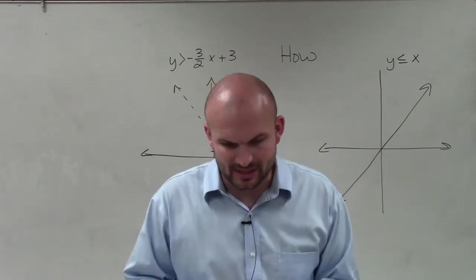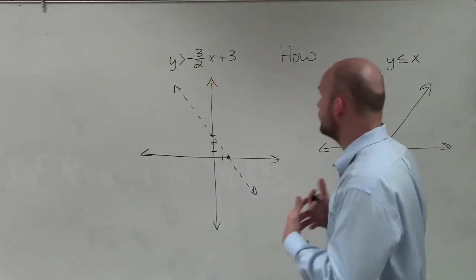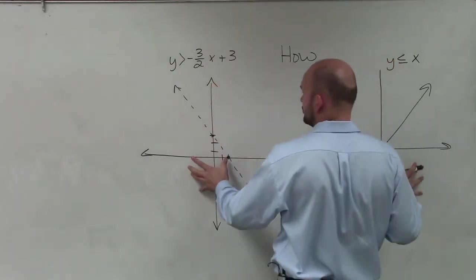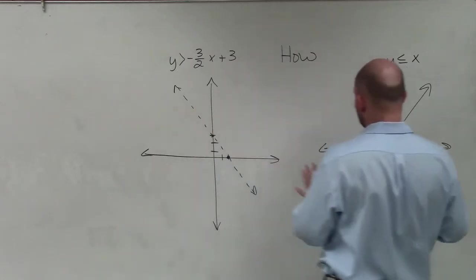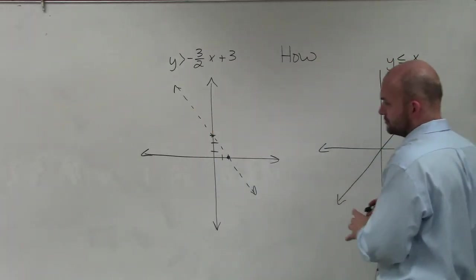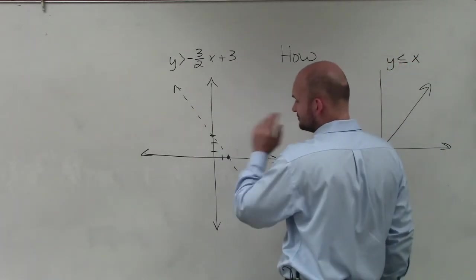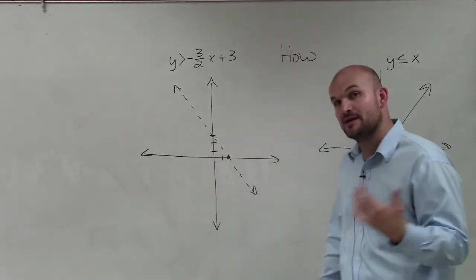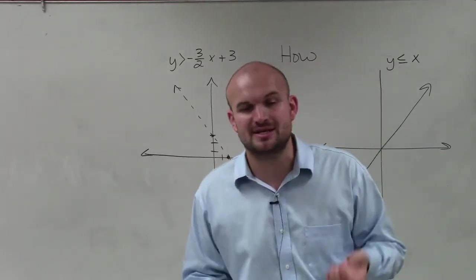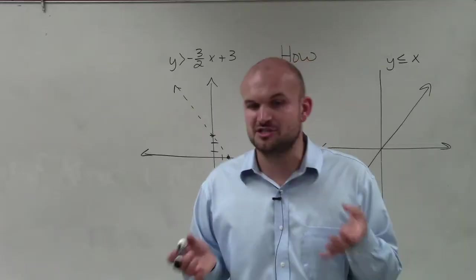When we're looking at shading for an inequality, the most important thing is determining not only whether the points on the line are part of the solution, but whether the points above or below the line are part of our solution. That's what really separates a linear inequality from a linear equation.